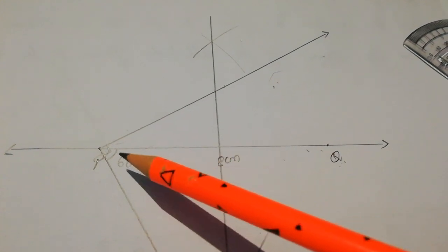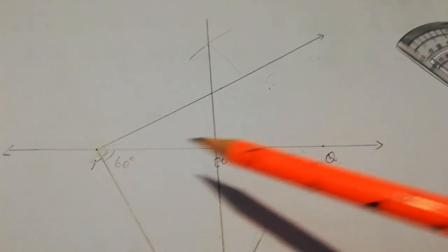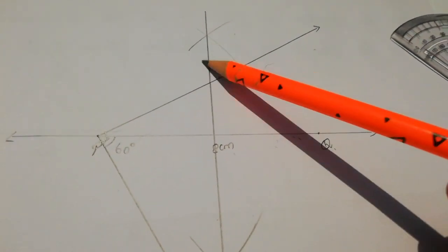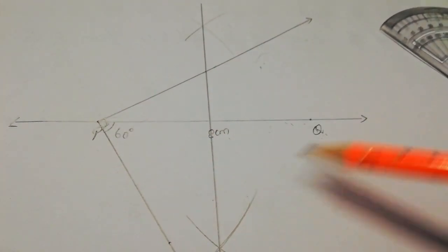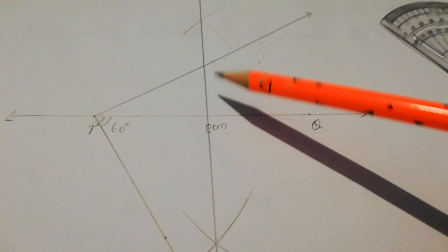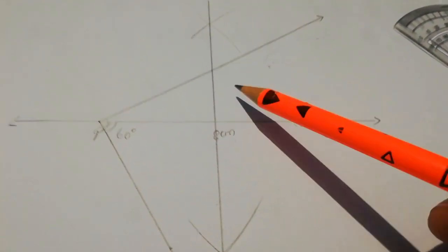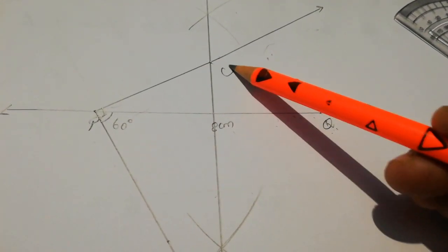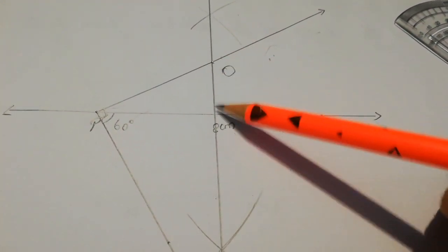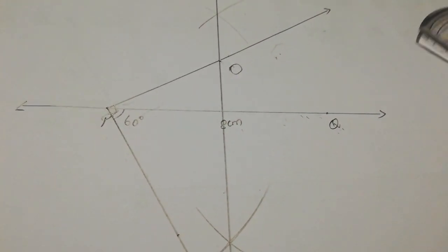Next, construct the perpendicular bisector of PQ. Take more than half of PQ and draw arcs from P and from Q. Join the intersection points — that gives the perpendicular bisector of PQ. This line meets PQ at 90 degrees and bisects it.